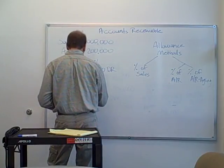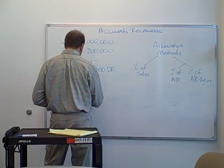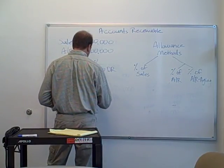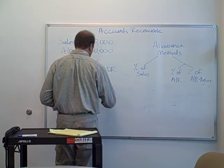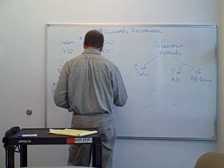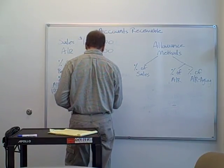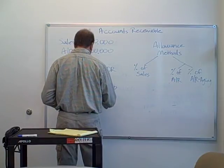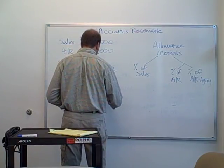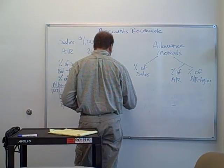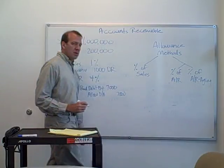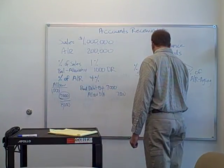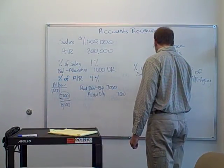So we're going to debit bad debt expense $7,000 and credit the allowance for doubtful accounts $7,000. That's our adjustment. Now let's take a look at what the balance sheet would look like.